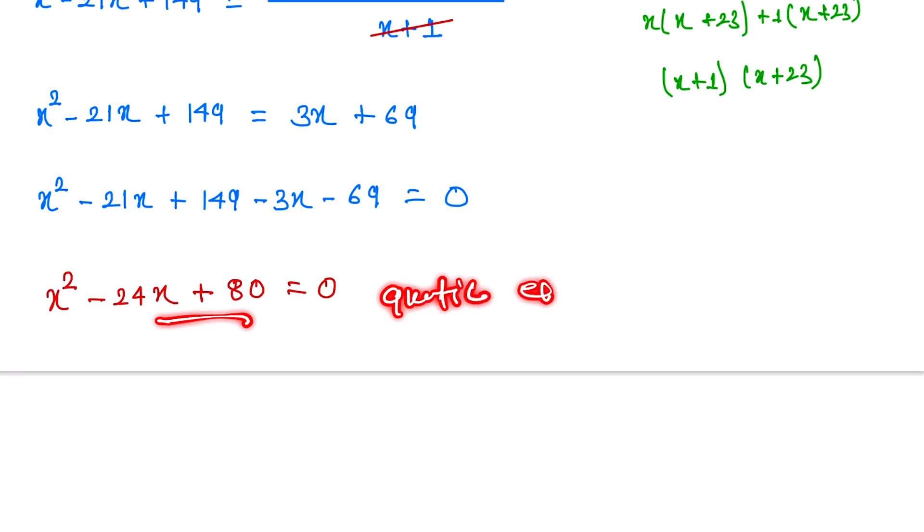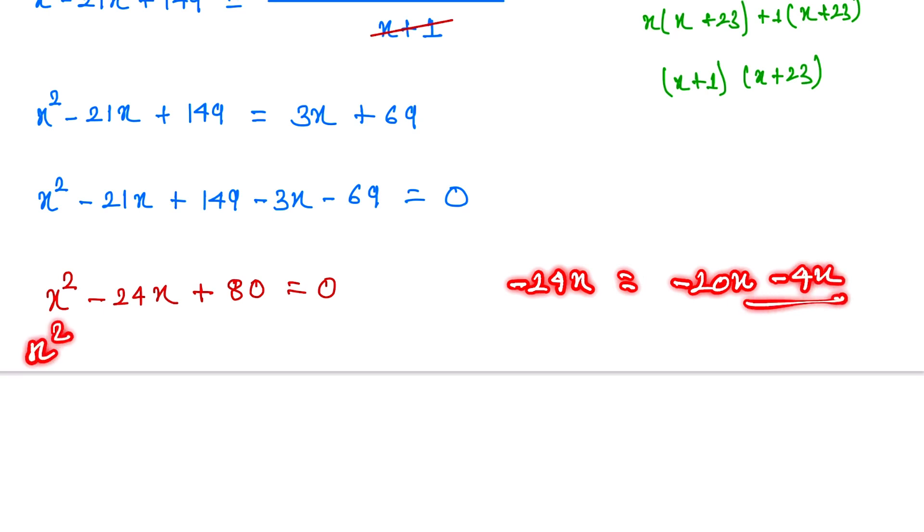And this one is also a quadratic equation, so now we factorize this quadratic equation. So now we split -24x like that. We multiply, we get 80x. So here is -20x and -4x.